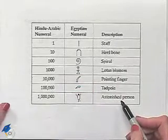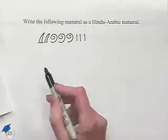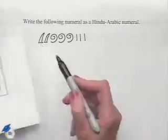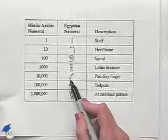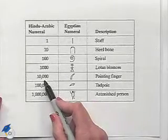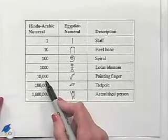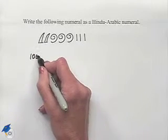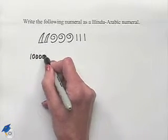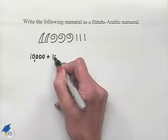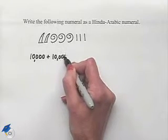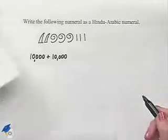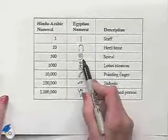Let's start by noticing that the first symbol we see looks like a pointing finger, and that stands for the value of ten thousand. We have two of those, so this is going to be ten thousand plus another ten thousand. Next, we see a symbol which is a spiral — we can locate that in our chart.